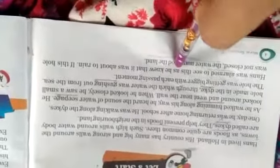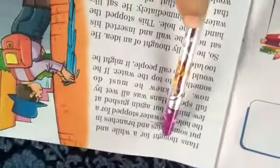Hans was alarmed. Hans got scared to see this as he knew that it was about to rain. If this hole was not closed, the water may flood the land. Hans thought for a while and put some twigs. Seeing all these things that water is coming from the sea, Hans thought and put some twigs and branches in the hole.